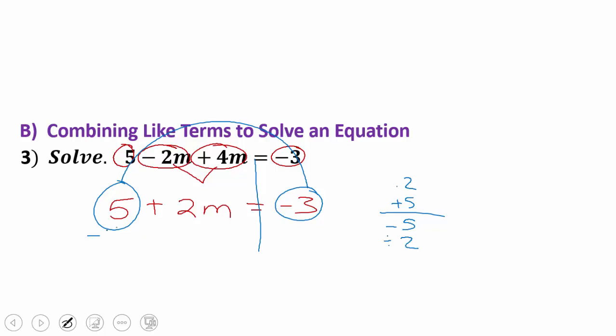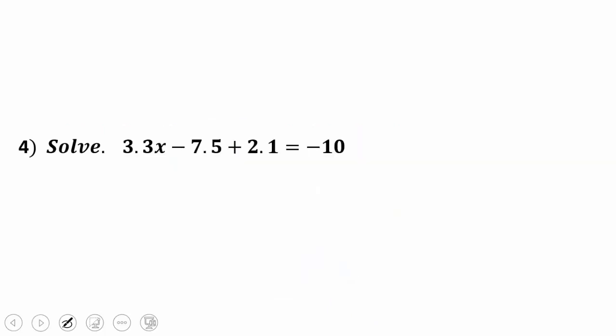So I come over here, I subtract five from both sides to isolate, keep the equation balanced. And 2m = −8. And then I'm going to divide by two. And when I divide by two, m is equal to negative four. Let's do this one more time, combining like terms. They could be the variable terms or they could be constant terms.